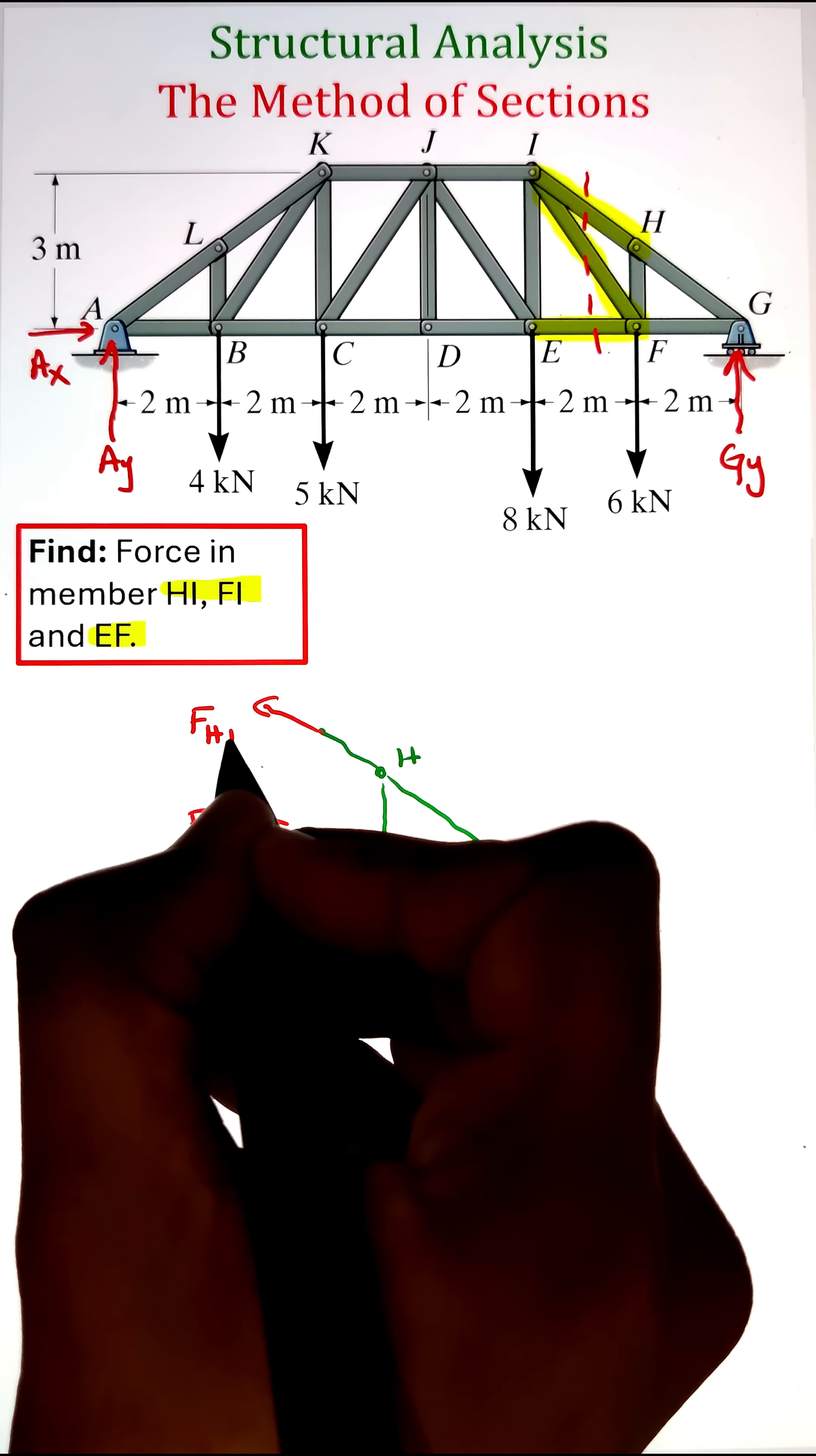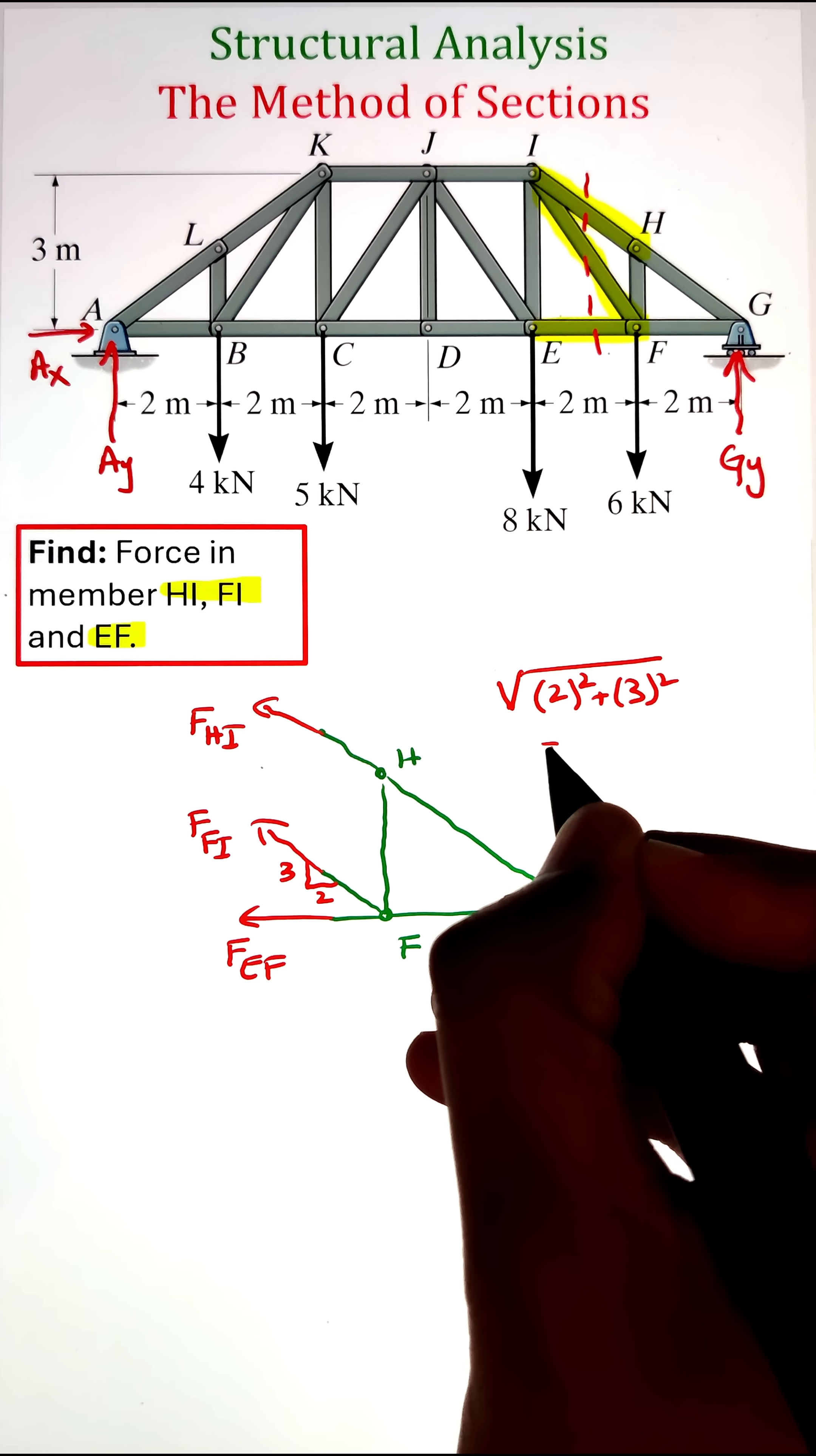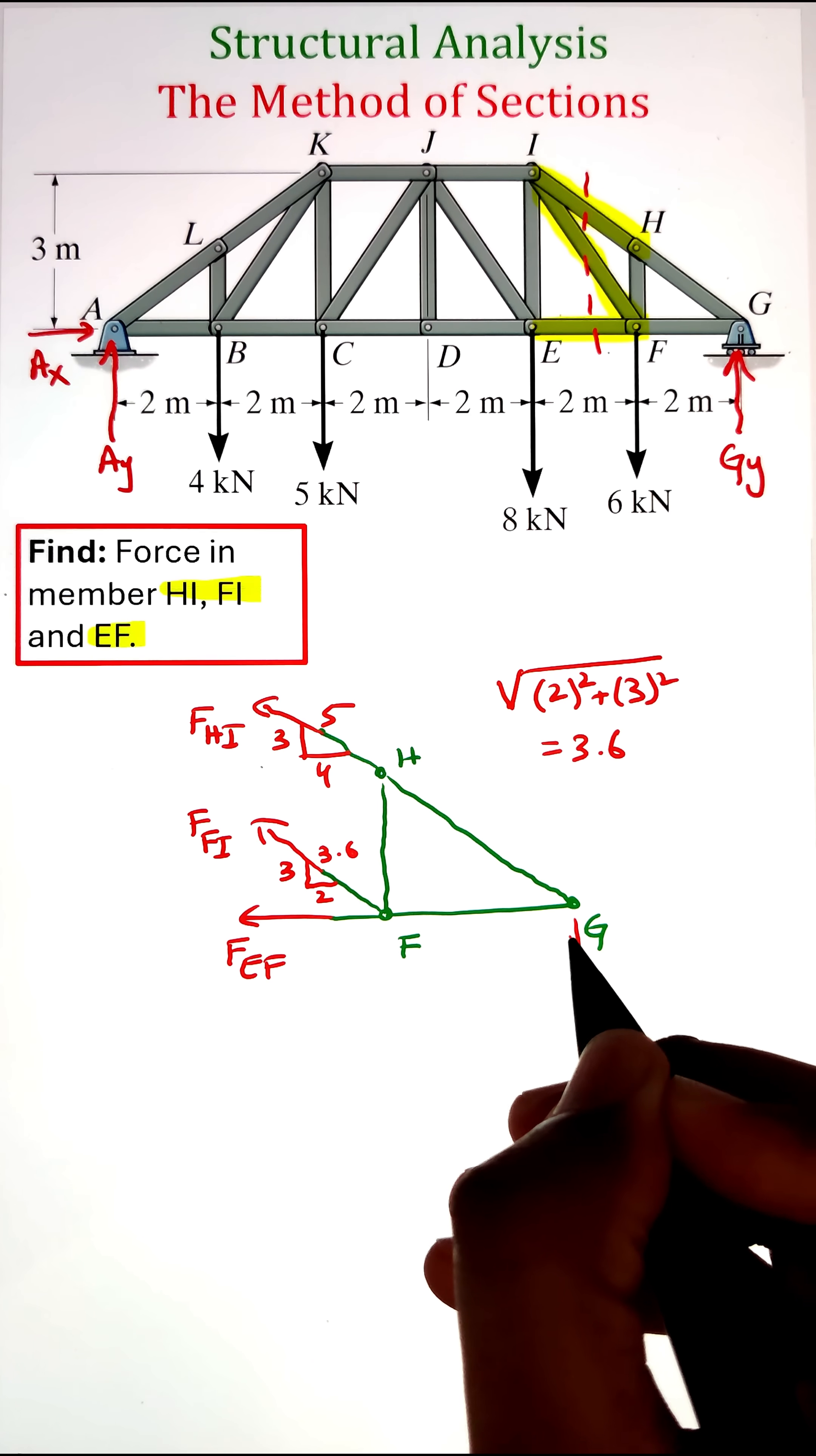Once we have identified the forces, we can also identify the direction of forces acting along the axis of these members. For force FFI, since the base of the triangle is 2 and the perpendicular distance is 3, the hypotenuse can be calculated using the Pythagorean theorem, which is 3.6. Force FHI makes a triangle of 3, 4, and 5.